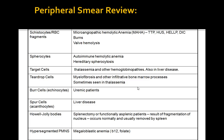Rouleau formation can be seen in multiple myeloma or a hyperglobulinemia state. Teardrop cells, also known as dacrocytes, were also discussed. Intra-RBC findings include basophilic stippling, which can be due to abnormal hemoglobin, sideroblastic, or megaloblastic anemia; Heinz bodies, common in G6PD deficiency; and Howell-Jolly bodies, which are nuclear fragments seen in splenectomy or sickle cell disease patients.